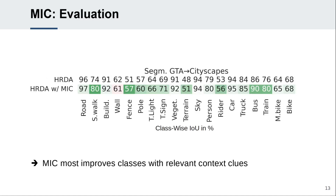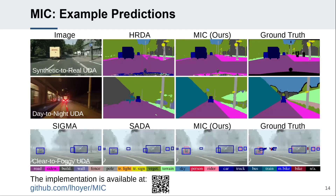In the class-wise analysis, MIC shows improvement for almost all classes. The highest gains are achieved for classes with important context relations, such as curb for sidewalk, post for fence, bicycle for rider, or rails for train. This is also reflected in the example predictions of different UDA scenarios, showing that MIC better recognizes the classes sidewalk, train and rider. The implementation of MIC is available on GitHub.